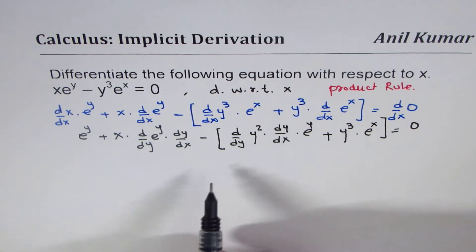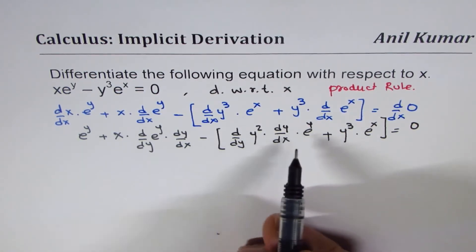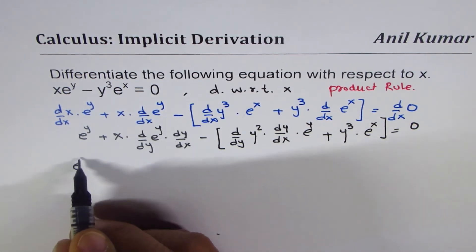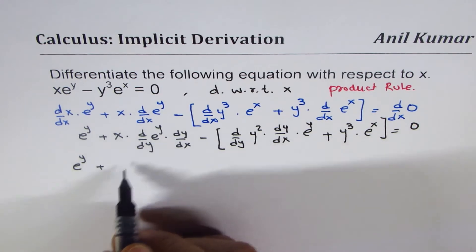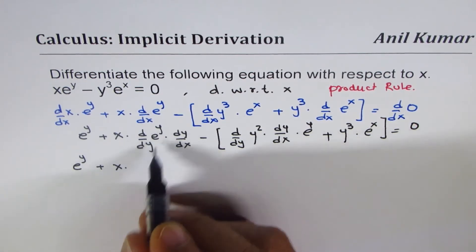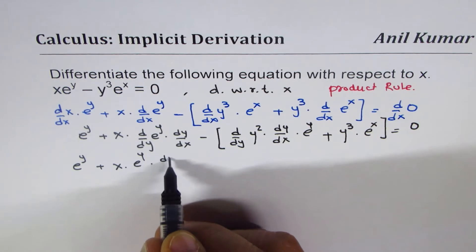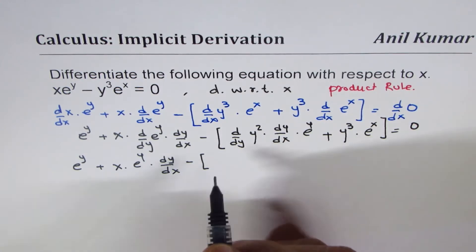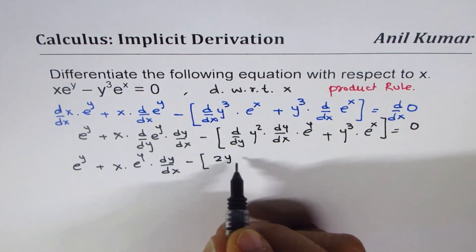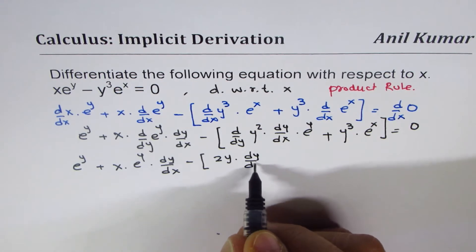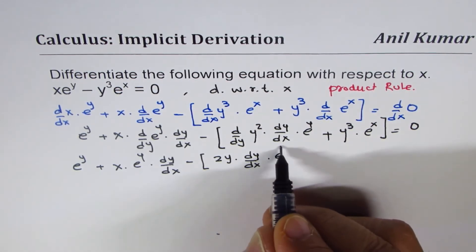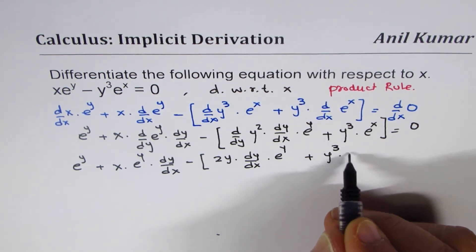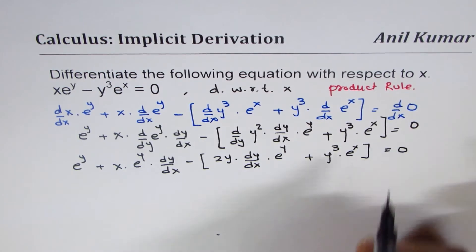So we get a few terms with dy/dx. We'll rearrange to find the value of dy/dx. So we have e to the power of y plus x times e to the power of y times dy/dx, minus — in brackets — derivative of y cubed with respect to y is 3y squared times dy/dx times e to the power of x, plus y cubed times e to the power of x, equals 0.